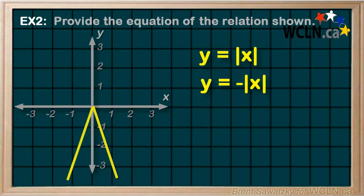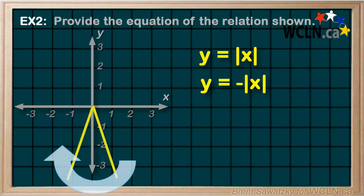And again, a horizontal reflection would be irrelevant in this case. If we reflected around the y-axis, it would land on itself exactly. That is no change.